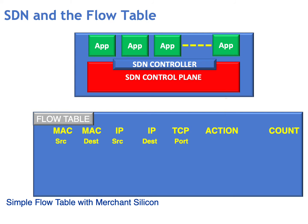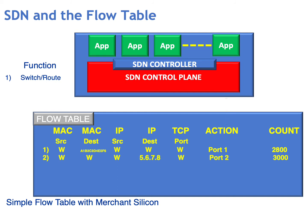We can also decide what action to take on specific TCP ports, and we can maintain statistics. For example, one function could be to switch or route based on the MAC address — when you see a particular destination address, forward that traffic out onto port one. You can also see we can keep count of the packets going through the port and feed these up to the central controller.